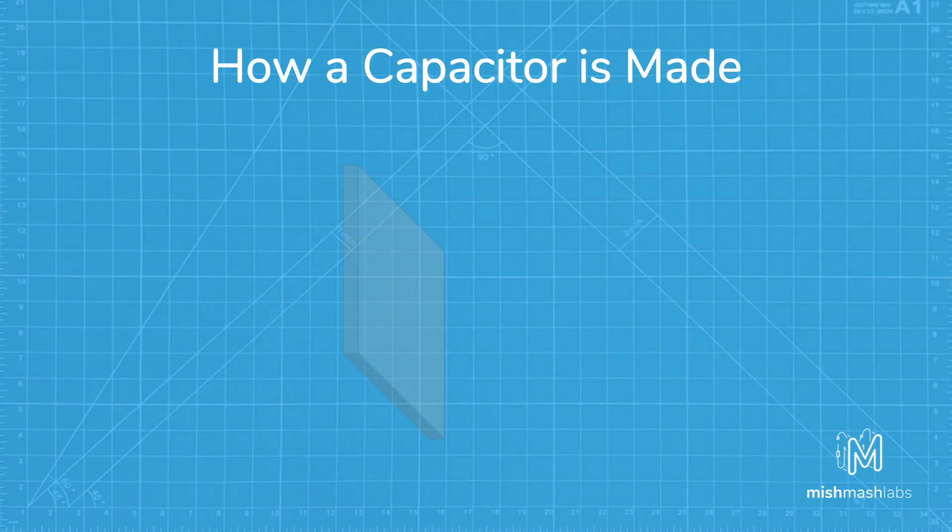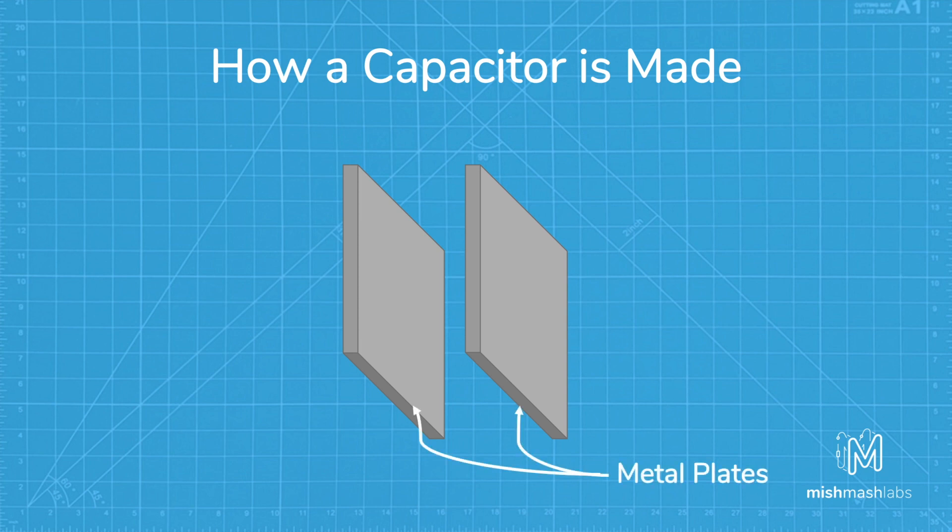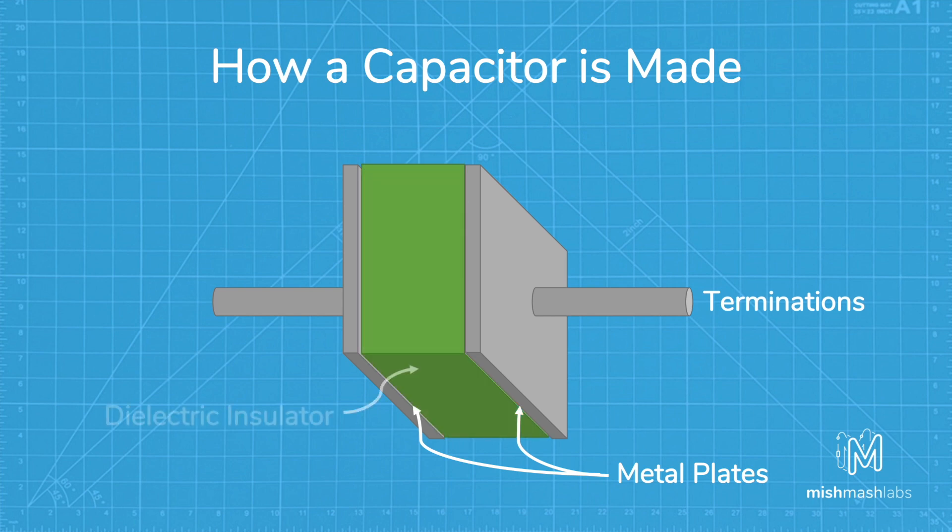A capacitor is made by placing two conductive metal plates close together in parallel. Each plate has a termination on one end. In between the metal plates is an insulating material called a dielectric. The dielectric can be made of all sorts of insulating materials such as paper, glass, rubber, ceramic,